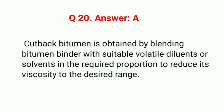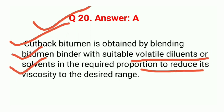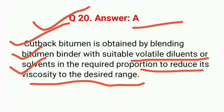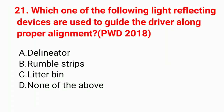Cutback bitumen is obtained by blending bitumen binder with a suitable volatile diluent/solvent in the required proportion to reduce its viscosity to the desired range. Answer is A.